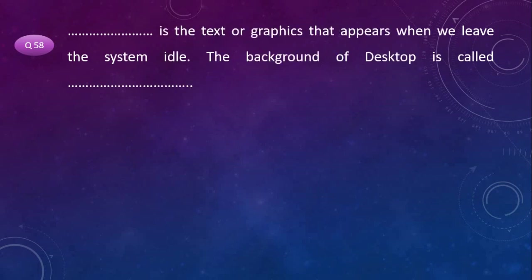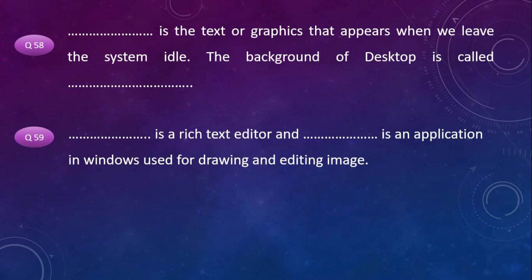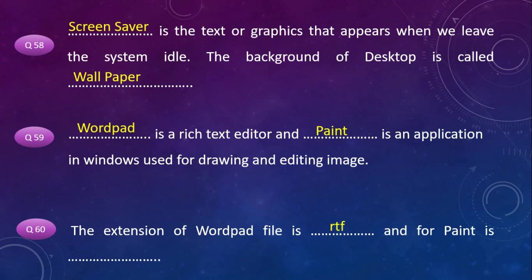Screen saver is text or graphics that appears when we leave the system idle. The background of the desktop is called wallpaper. WordPad is a rich text editor and Paint is an application in Windows used for drawing and editing images. The extension of a WordPad file is .rtf and for Paint is .png.